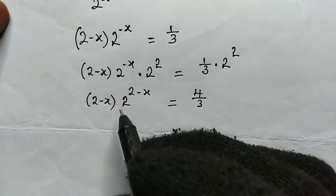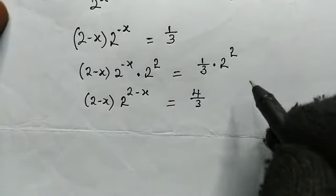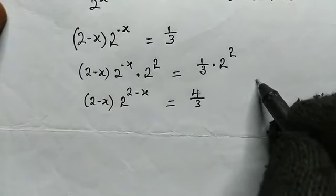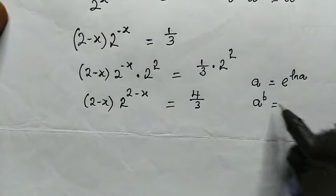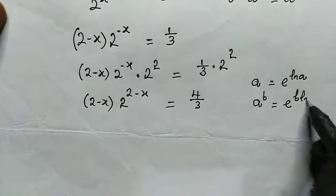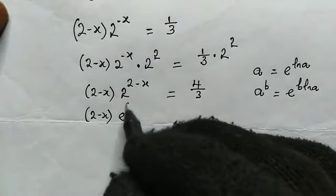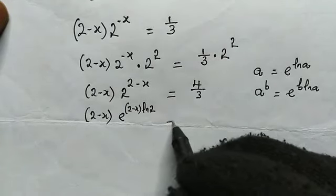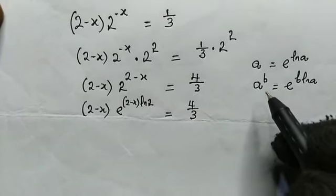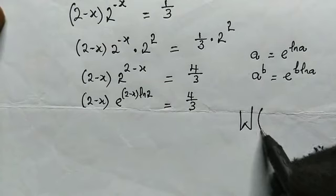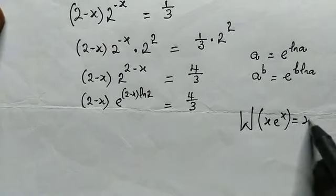We can see that the power of 2 here is exactly the same as the coefficient. Now let us make use of this nice and interesting property: a is the same as e to the power of ln of a. When a has the power of b, then this will be e to the power of b multiplied by the ln of a. So from here, we have 2 minus x, then this will be e raised to the power of 2 minus x multiplied by the ln of 2, and this equals 4 divided by 3.